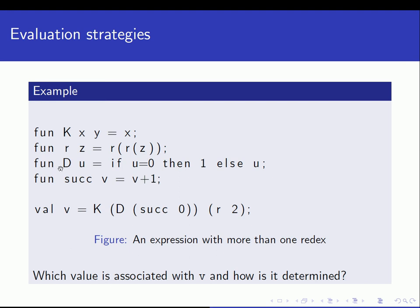We have function d with argument u, and the body says if u is equal to zero then we return one, else we return u. And finally, function successor takes one argument v and returns v incremented by one. Now imagine we define a name v and associate it with the value on the right hand side, which is a complex expression.